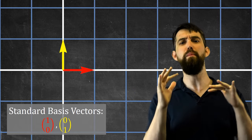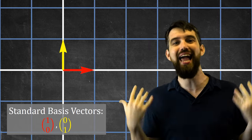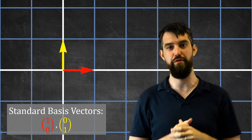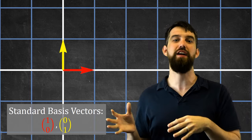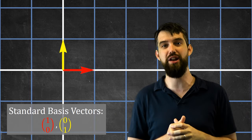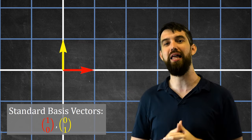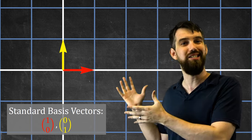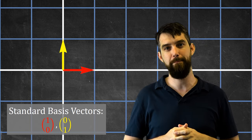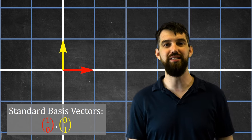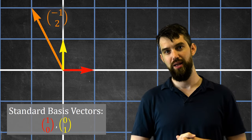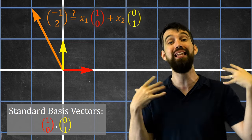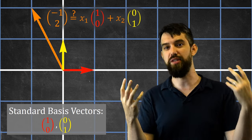There are two vectors that are so important I want to highlight them: the standard basis vectors. These are the vectors (1,0) and (0,1) — just going one step to the right or one step up. Now, why are they so nice? Suppose I take the vector (-1,2) and ask: is (-1,2) in the span of the standard basis vectors? Is (-1,2) a linear combination of (1,0) and (0,1)?